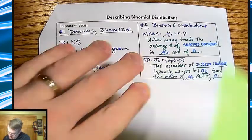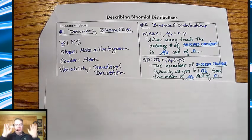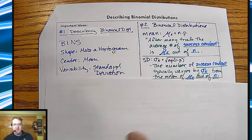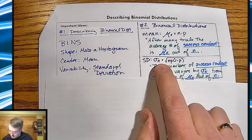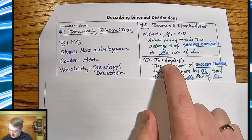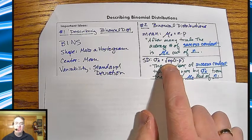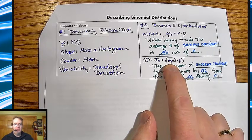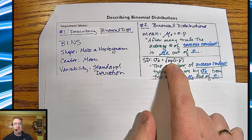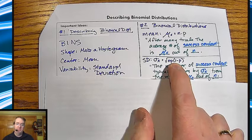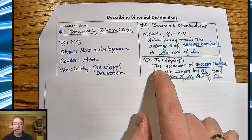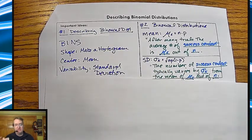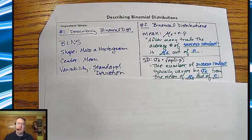For standard deviation, don't worry about all that pesky adding and subtracting and squaring. It's going to turn out to be this. The standard deviation of x is going to be the square root of the number of trials times the probability of success times the probability of failure. And then for the context, the number of, and then again, success in context, typically varies by standard deviation from the mean of mean out of and trials.